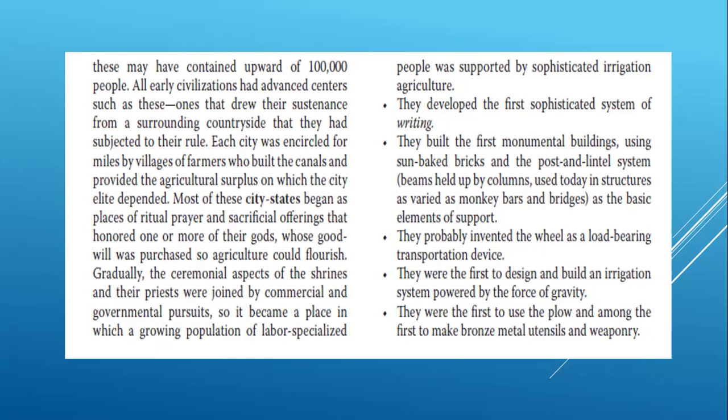Gradually the ceremonial aspects of the shrines and priests were joined by commercial and governmental pursuits. The Sumerians developed the first sophisticated system of writing. They built the first monumental buildings using sun-baked bricks and the post and lintel system — beams held up by columns — used today in structures as varied as monkey bars and bridges. They probably invented the wheel as a load-bearing transportation device. The first two discoveries that enabled man to move beyond being like a caveman were fire and the wheel.